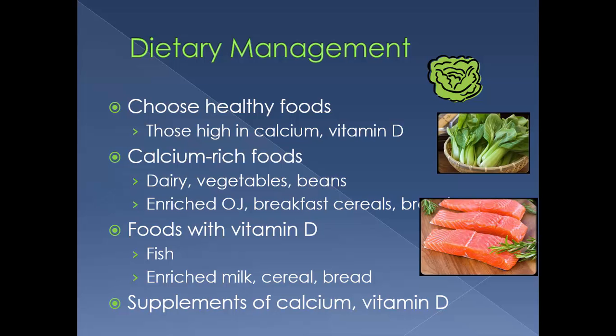Looking at dietary management, patients need to choose healthy foods that are high in calcium and vitamin D. Calcium-rich foods include dairy, vegetables, and beans. A lot of times dietary management is started before osteoporosis develops to help prevent it. There are also enriched orange juice, breakfast cereals, and breads that are supplemented with calcium compounds.